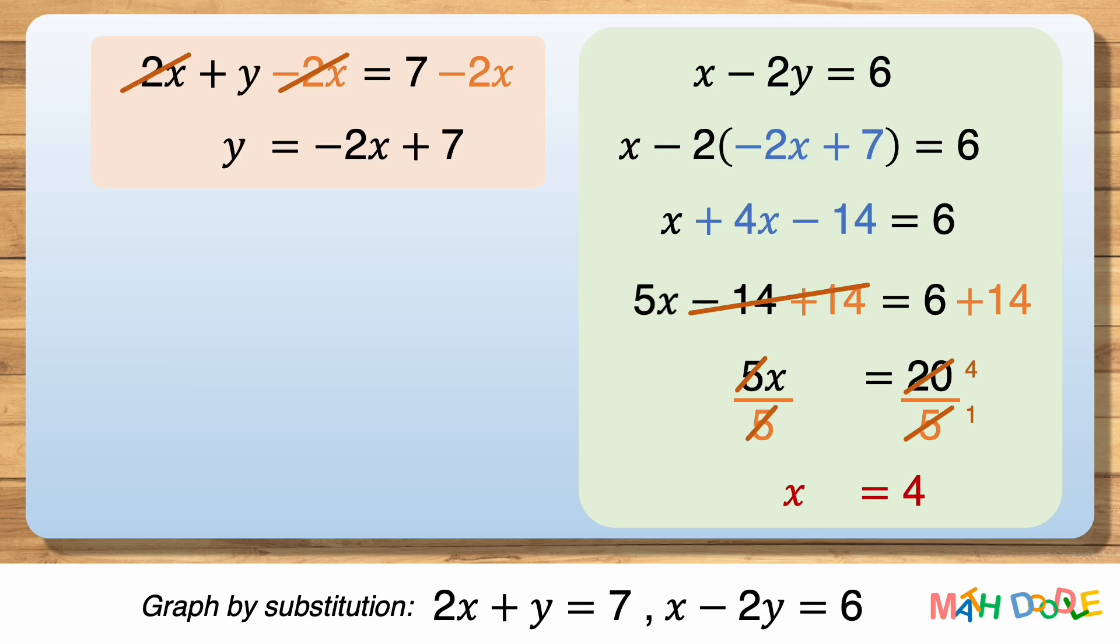Now, to find the value of y, let's substitute 4 for x in the other equation. Minus 2 times 4 is minus 8, and minus 8 plus 7 is minus 1.